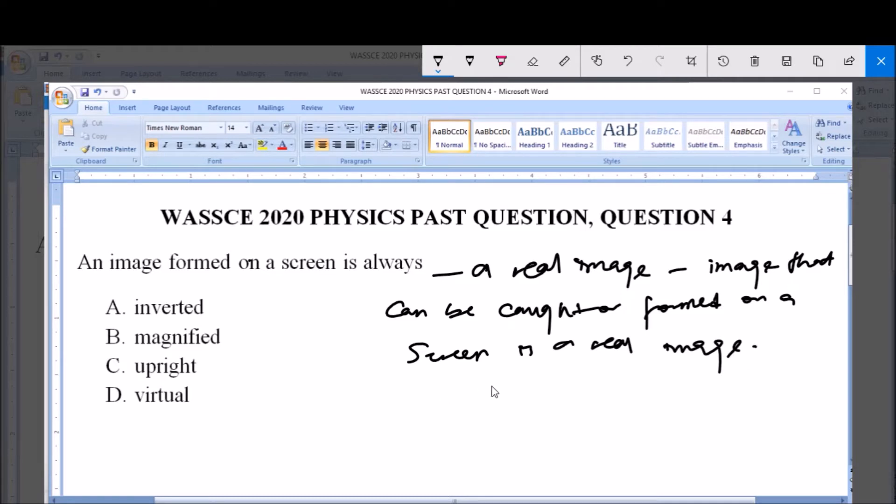Now real images are always inverted. Remember, we have two types of images: the real image and the virtual image. So real images are always inverted. Now for the virtual image...